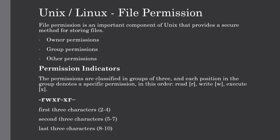These permission indicators are classified into groups of threes. Each position in this group denotes a specific permission in the order of read, write, and execute. In the previous lecture we have seen this type of pattern where we used the hyphen L option in the ls command. Let me show you how.